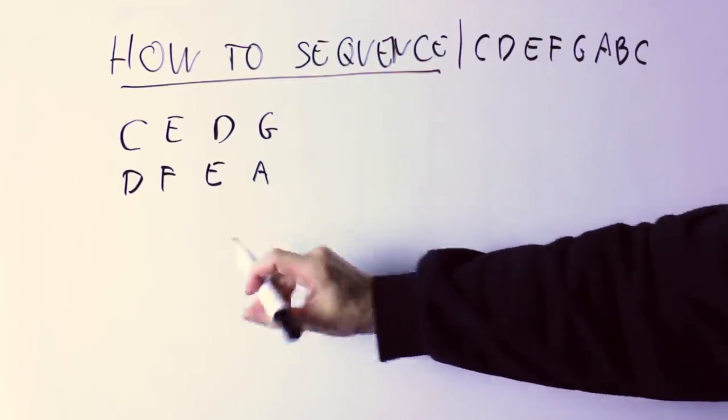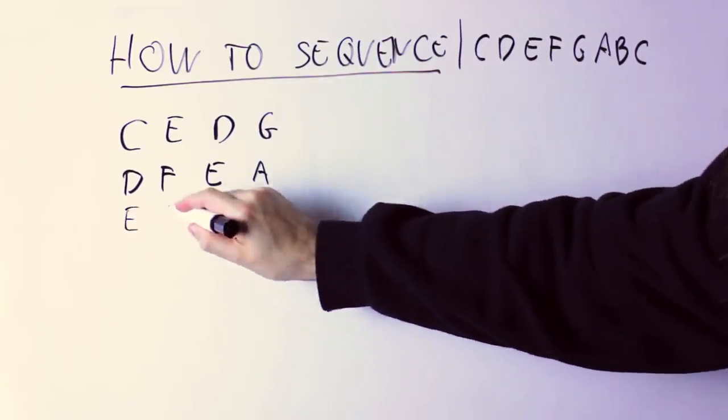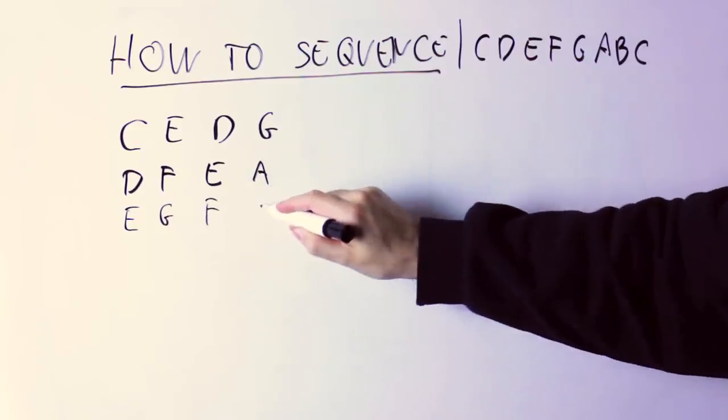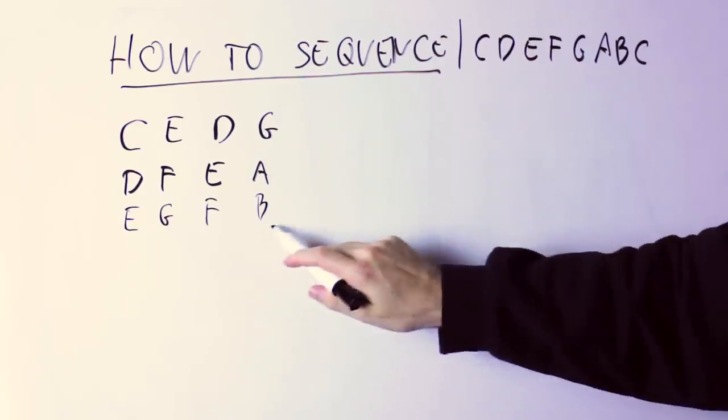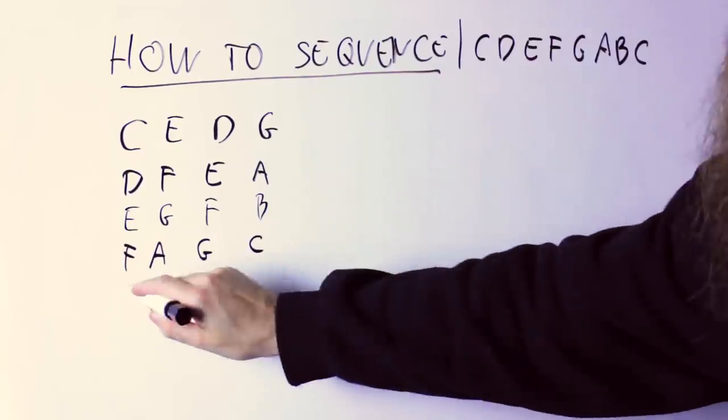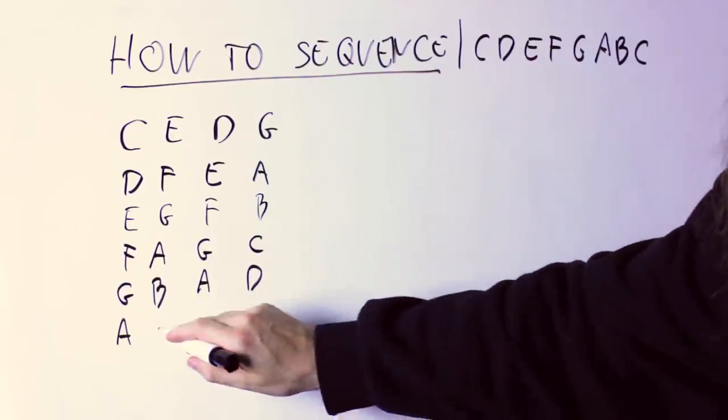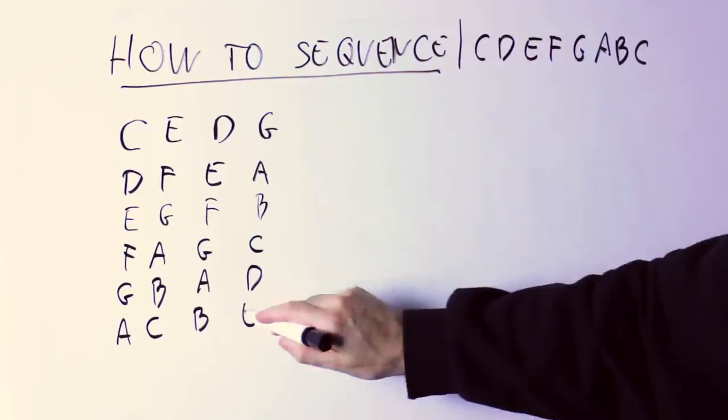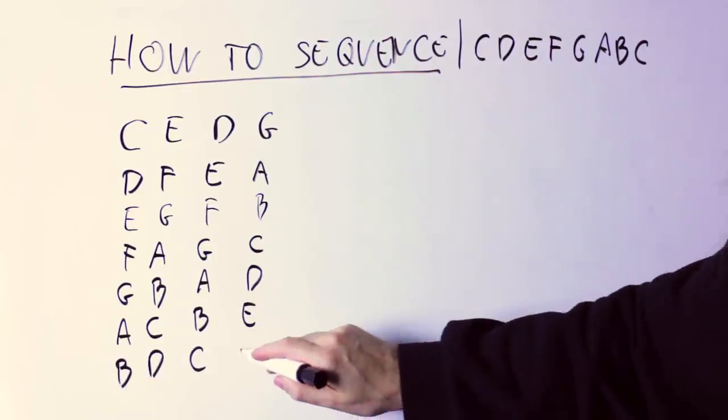Now I'm doing it again. So D becomes E, F becomes G, E becomes F and A becomes B. And then I do the same thing over and over. Every time I take every note of the melody and move it up one degree in the scale and play the resulting phrase.